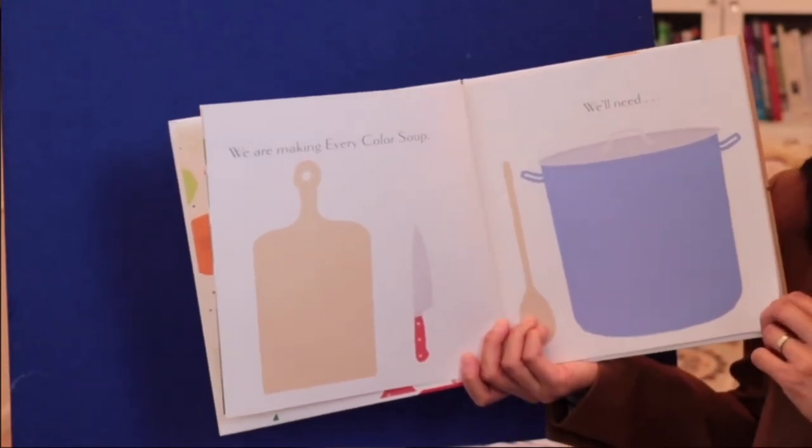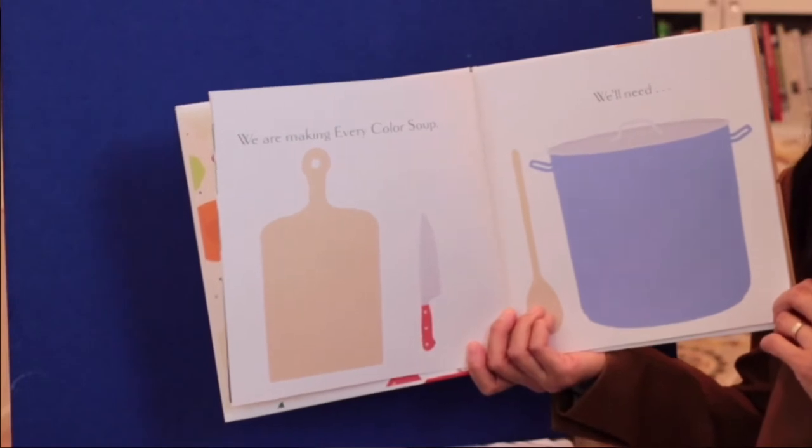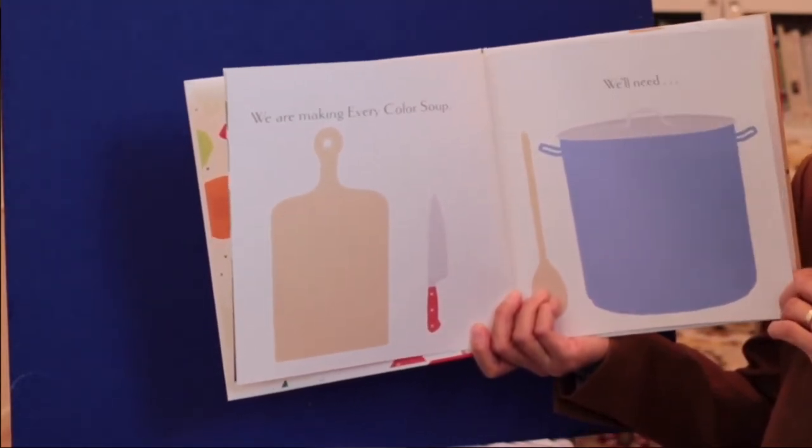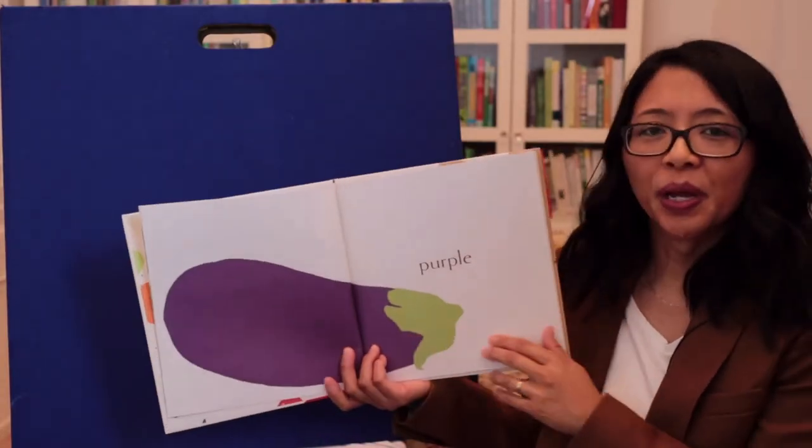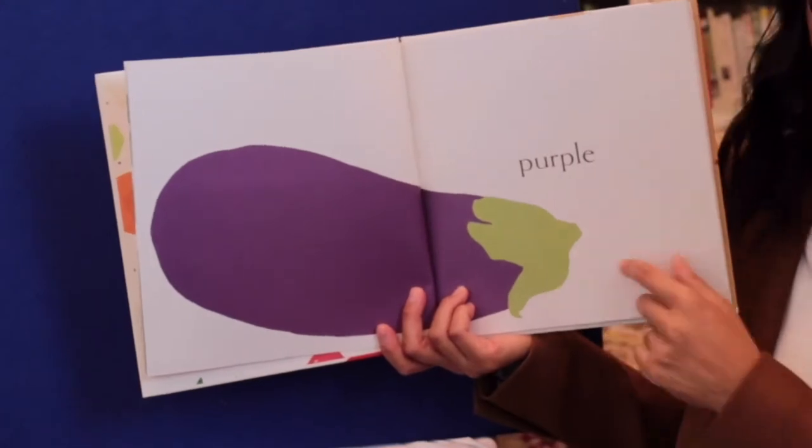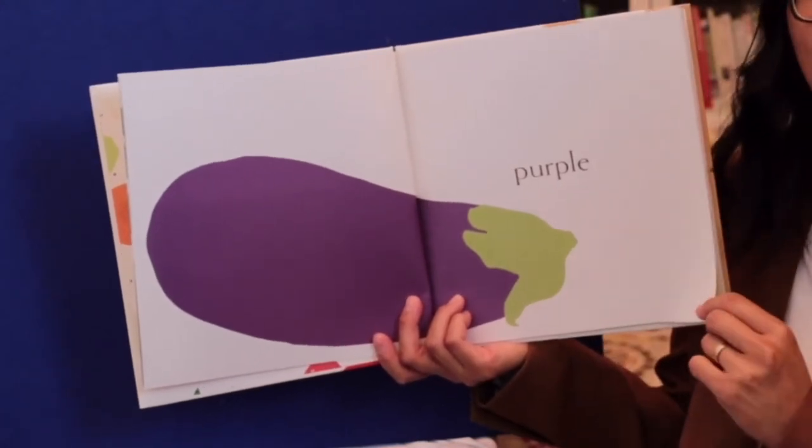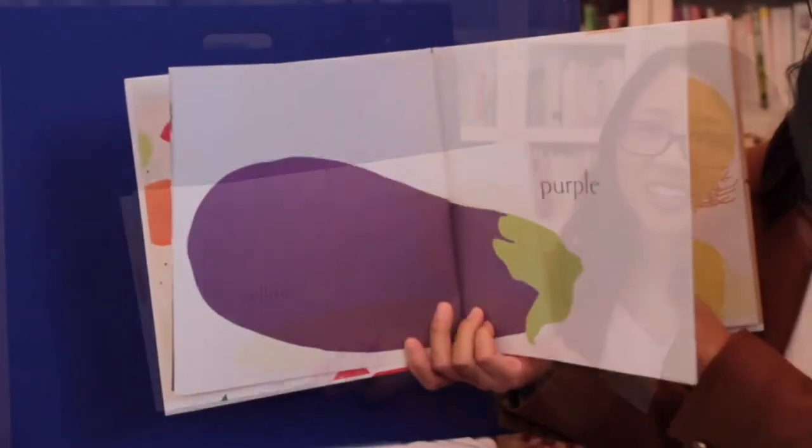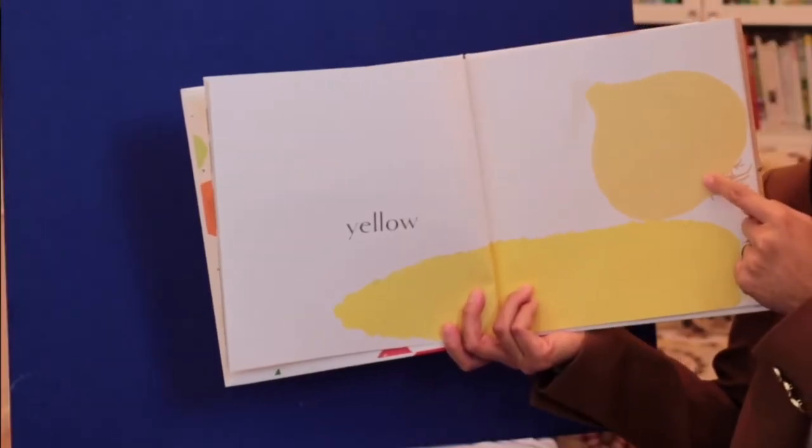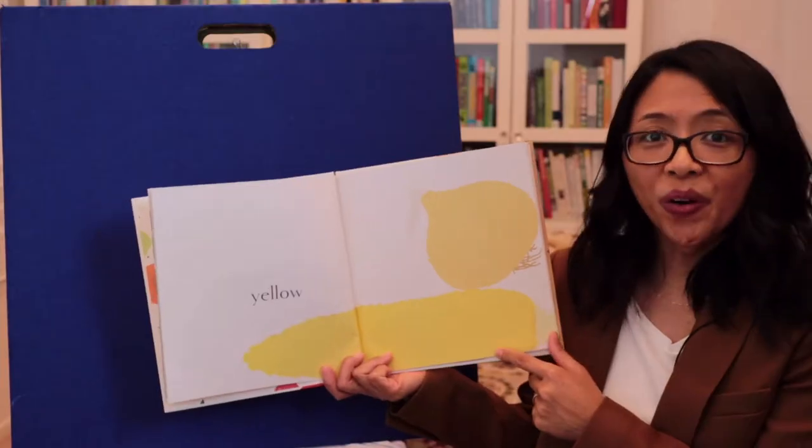We are making every color soup. We'll need purple. What do you think this is? It's an eggplant. Yellow. Onion and corn.